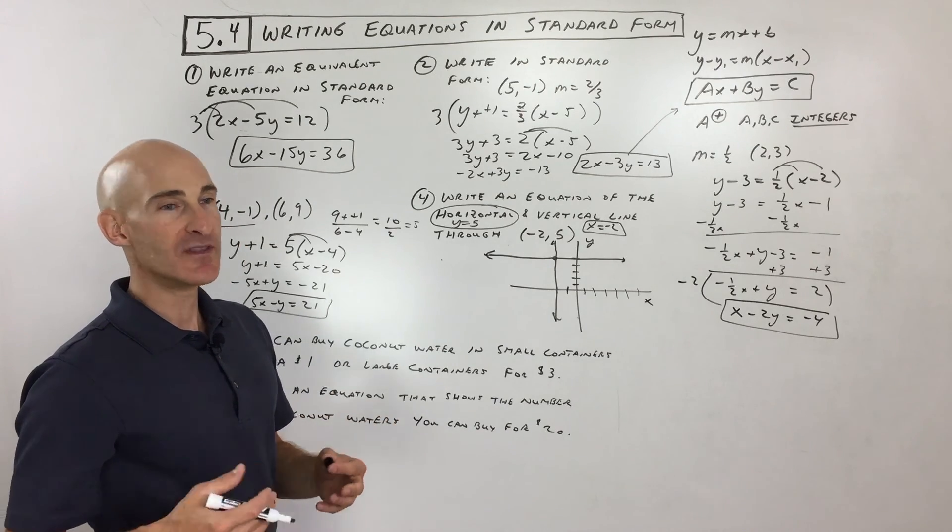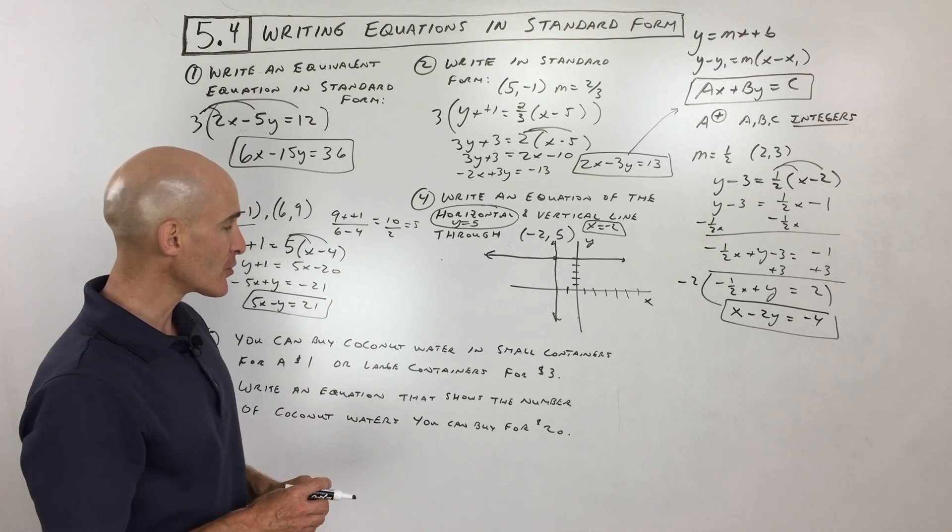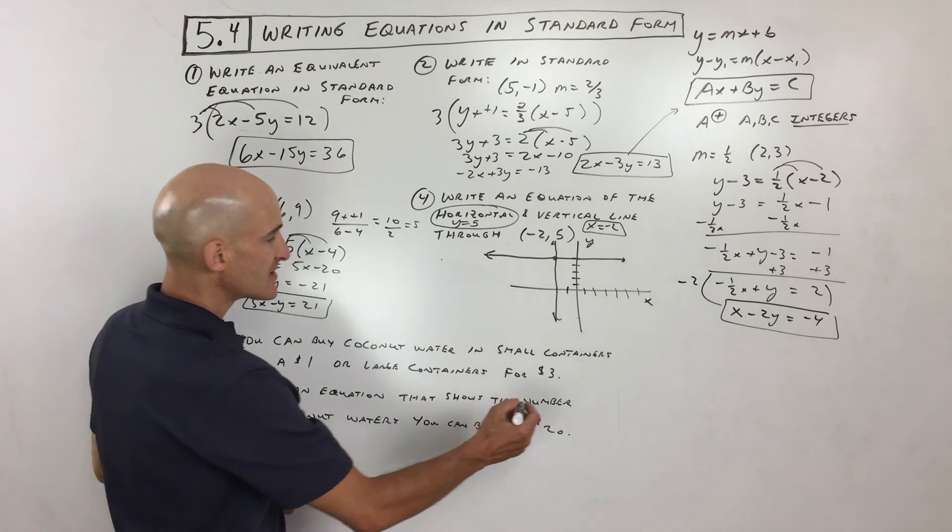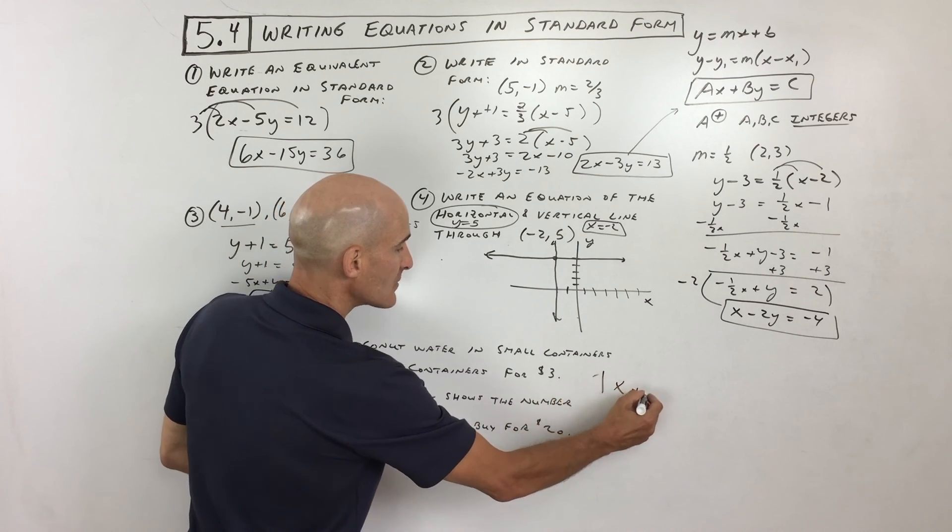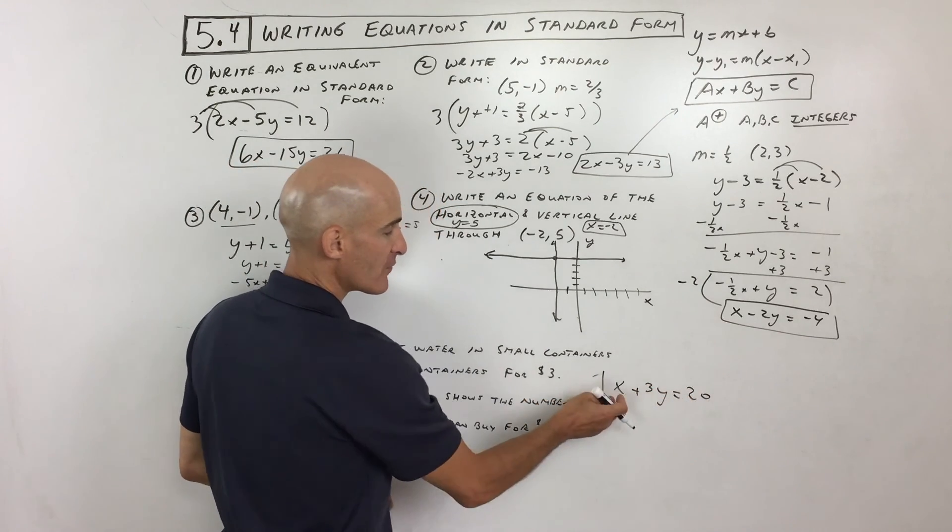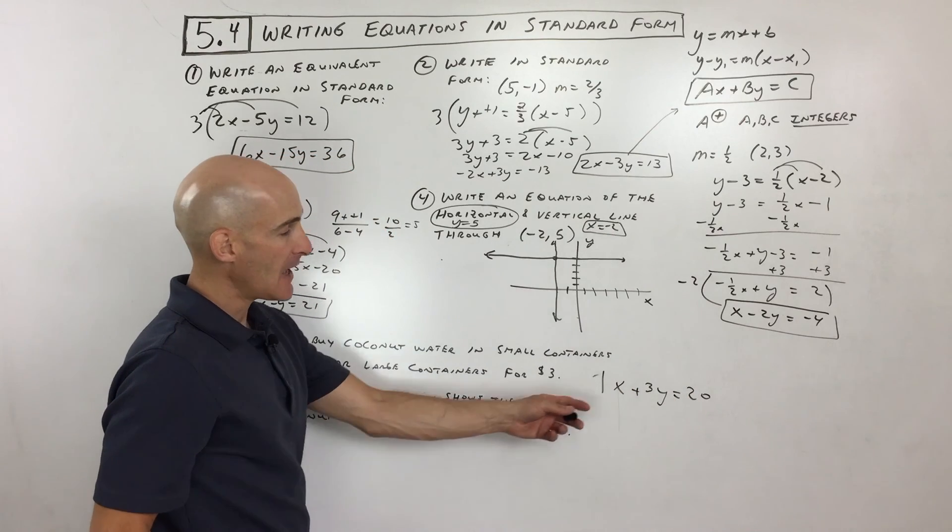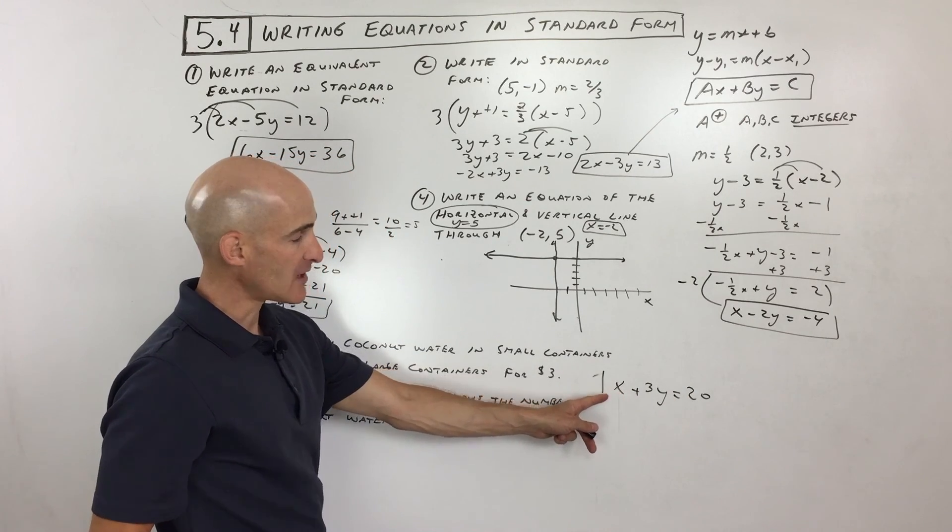Okay, so this is kind of an easy problem. It's oftentimes referred to as a linear combination. We talked about this earlier in the course, but let's just go ahead and say that this is 1x plus 3y equals 20. So you can see this is in standard form. The variables are on the left, numbers are on the right, and it makes sense. If you buy four small coconut waters, that's 4 times 1 is $4.